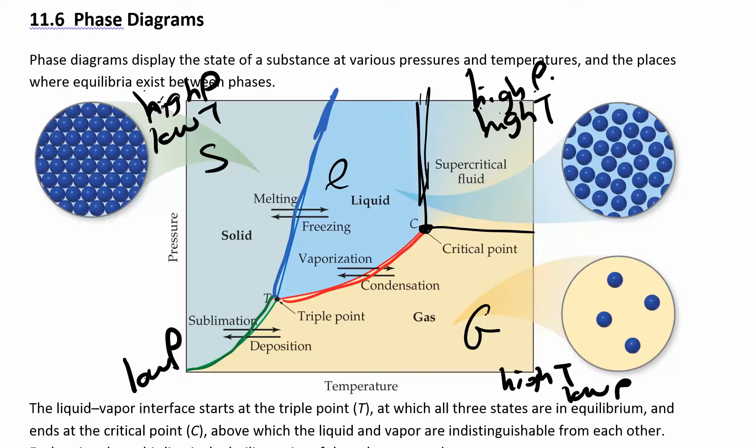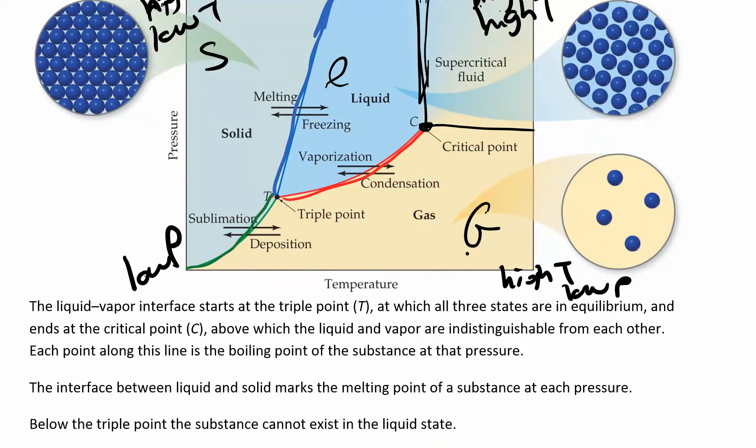Supercritical fluids have some pretty interesting uses. Supercritical carbon dioxide — if you soak coffee beans in supercritical carbon dioxide, it will dissolve the caffeine, so you can actually decaffeinate your coffee beans that way. You can look at the phase diagram for carbon dioxide to figure out what temperatures and pressures you need in order to do that. And that's just crazy — why would you want to take caffeine out of coffee beans?